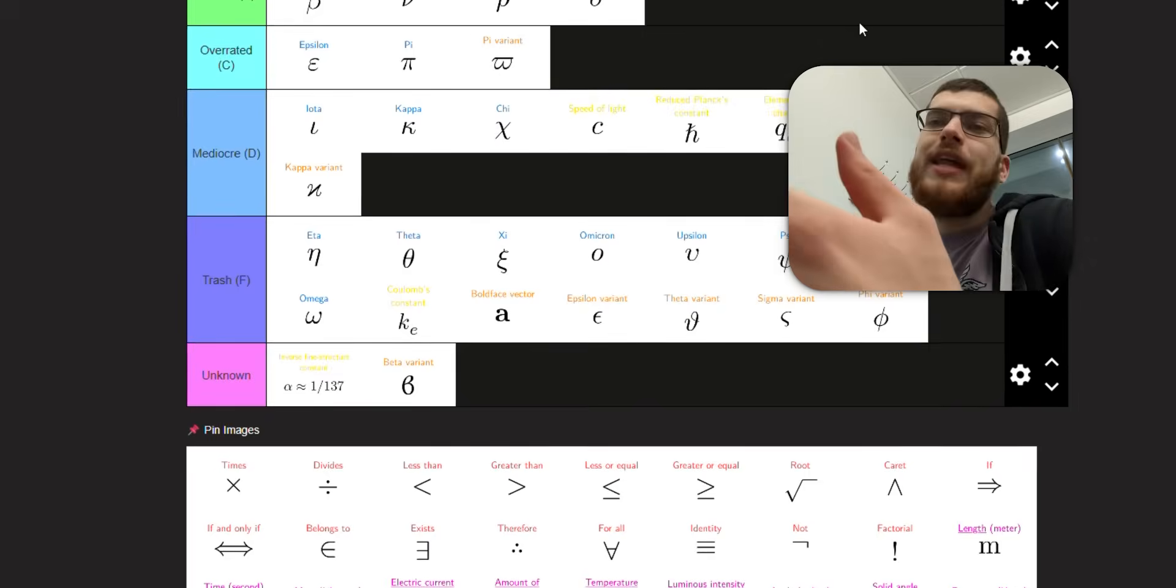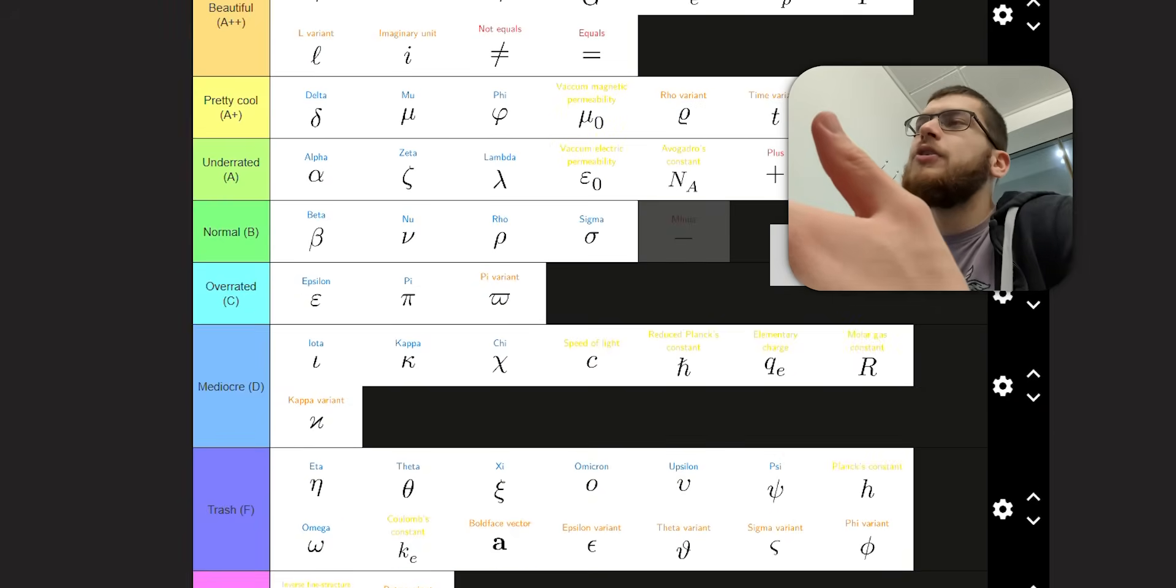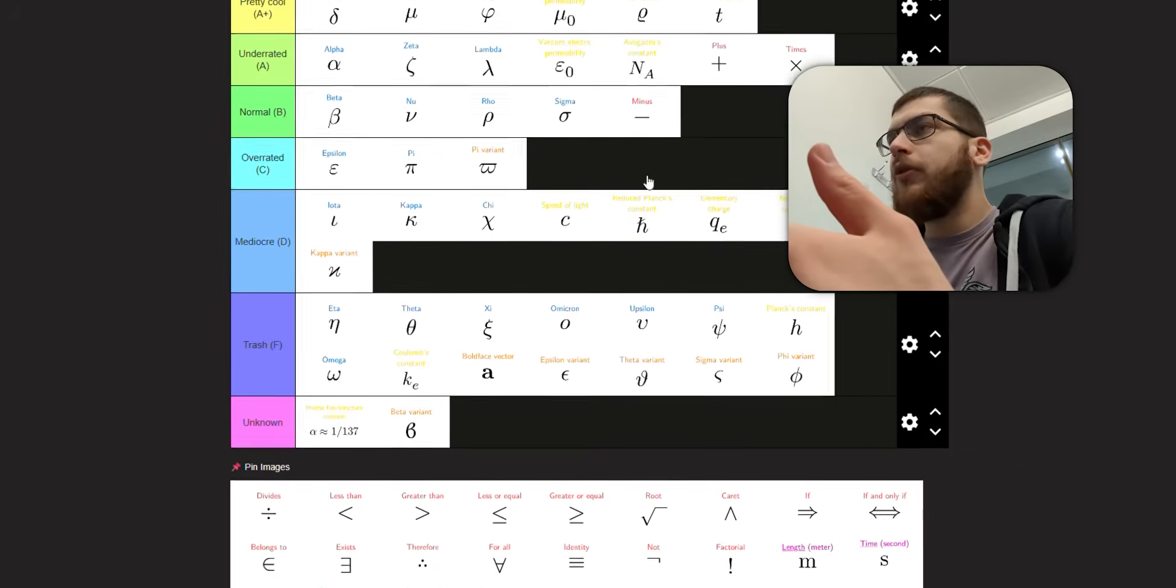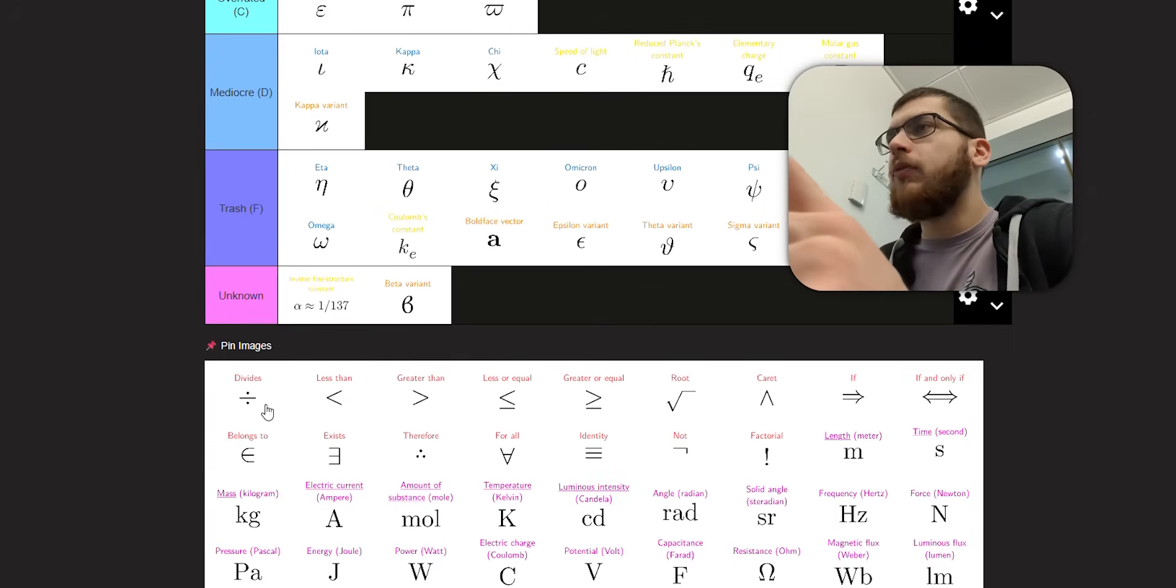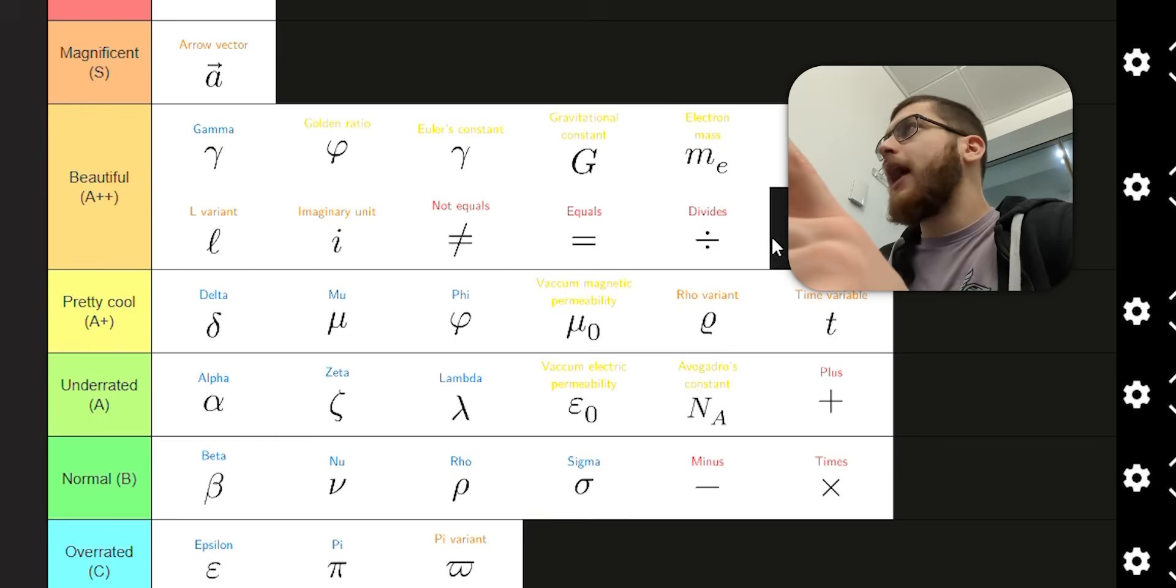Plus makes sense. I'm not against it. Minus. Yeah, it can be confusing a little bit with negative. Or, well, I mean, they are the same thing. But with the dash symbol, it just looks like a dash. So I'll put it in normal. Times. I'll put it in with plus. Actually, that can be confused with x. So I'll put it in with minus as well.